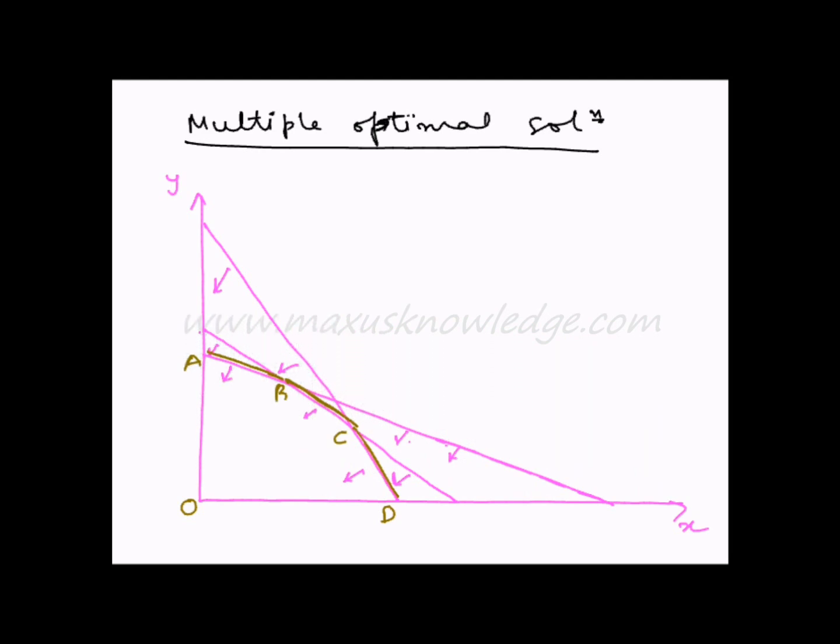When you start doing this, sometimes you may realize that the family of objective function lines is parallel to one of the boundaries of the feasible solution region.